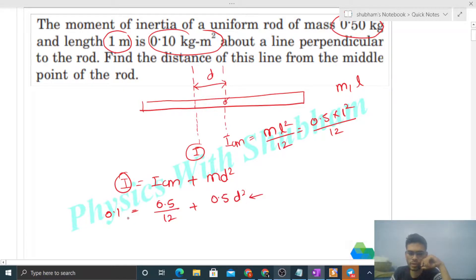So let's see, 0.1 minus 0.5 by 12, that is equal to 0.5 into d square. So it will be simply, we can write it 1.4 divided by 12, its root, that is the value of d.